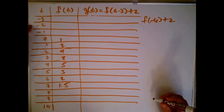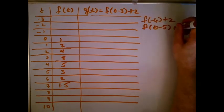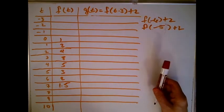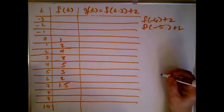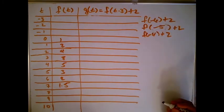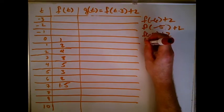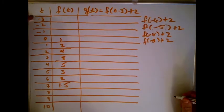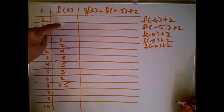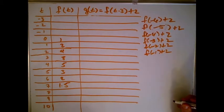When t is -2, I get f(-5) + 2, but I don't have f of -5. When t is -1, I get f(-4) + 2 — still can't do it. When t is 0, I get f(-3) + 2 — don't have it. t = 1 gives f(-2) + 2, t = 2 gives f(-1) + 2. All of these spots are empty because I don't have the required input values.